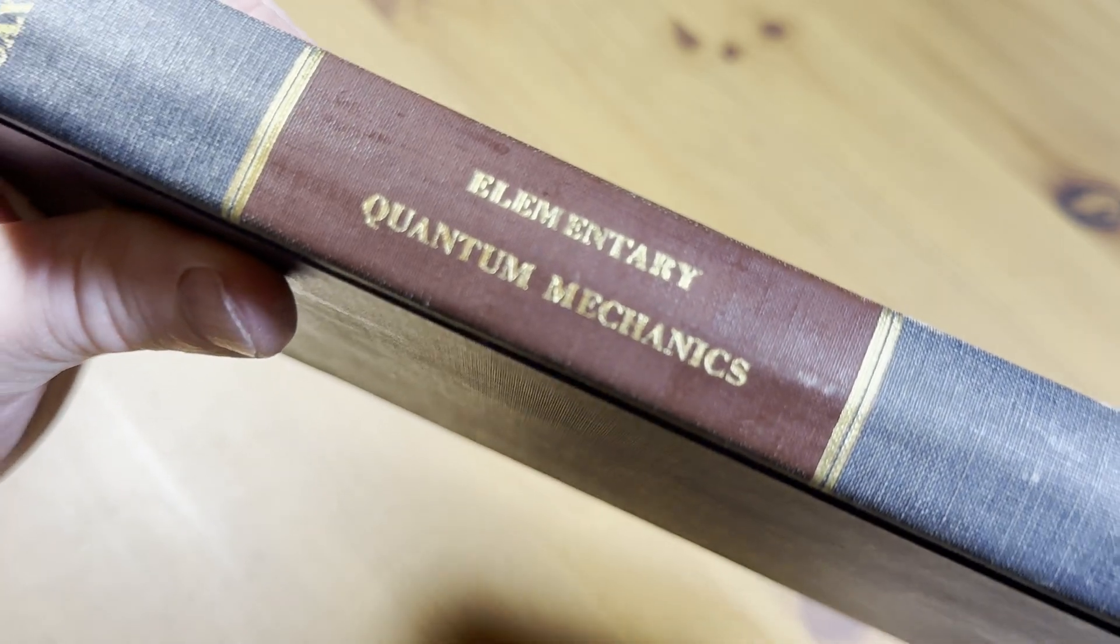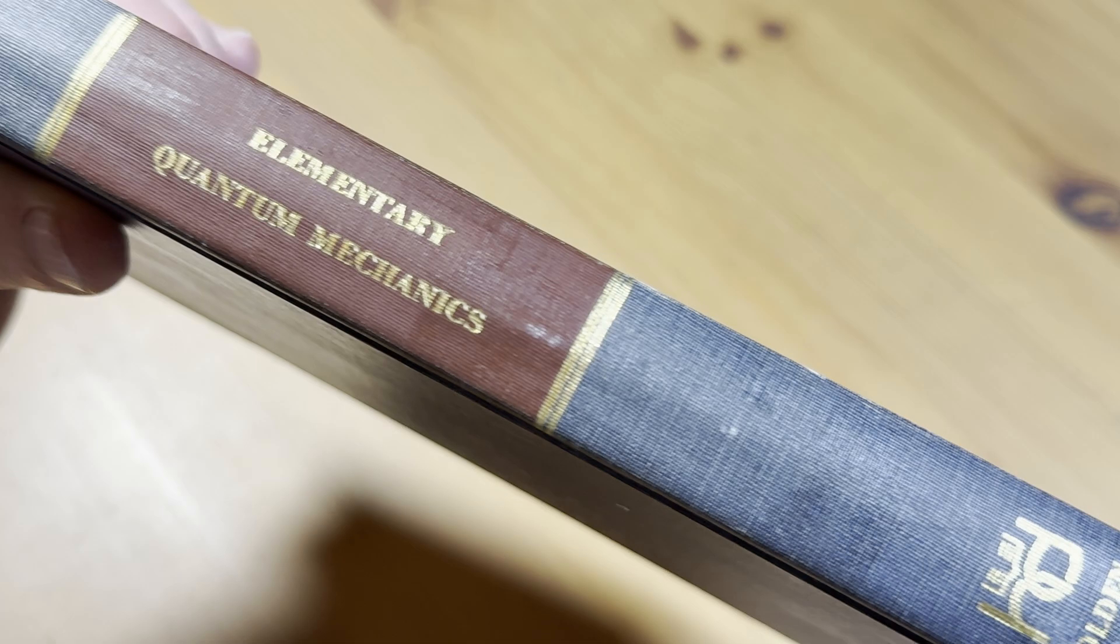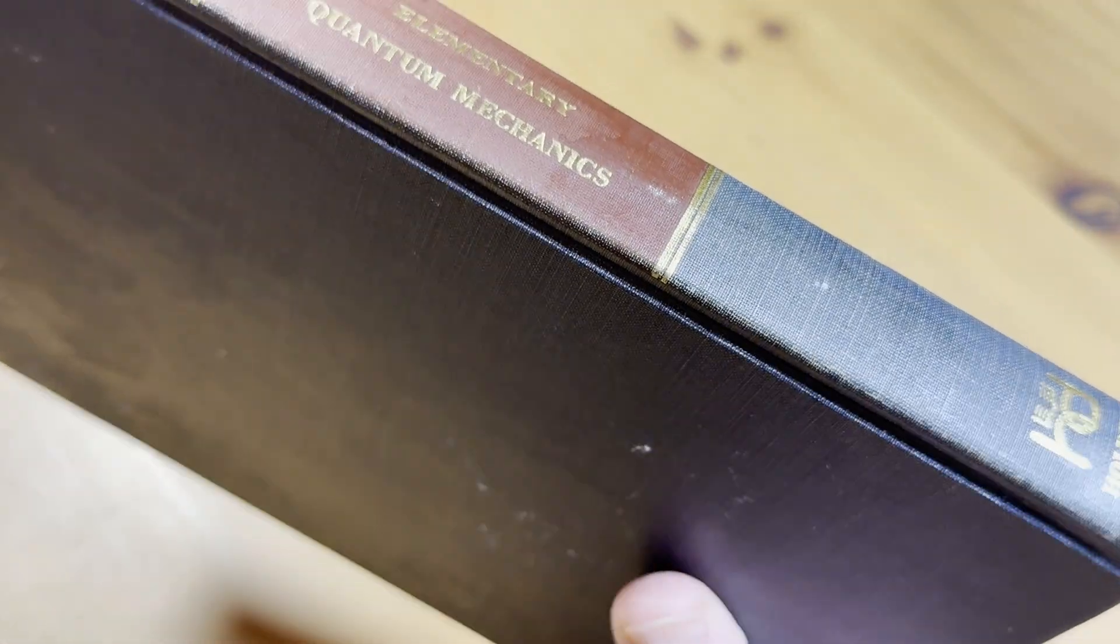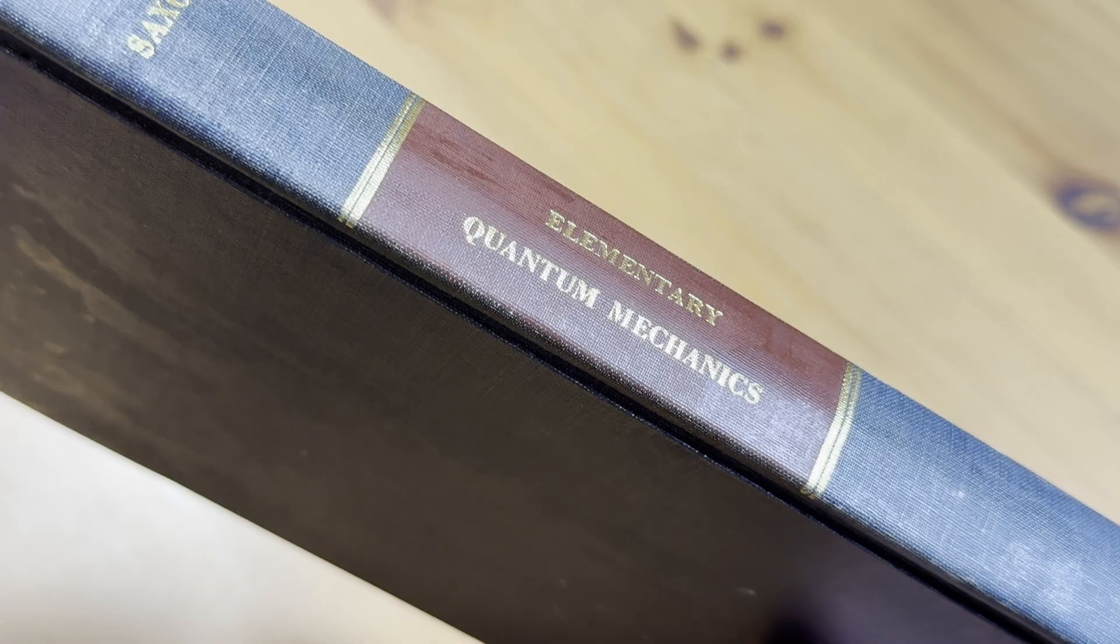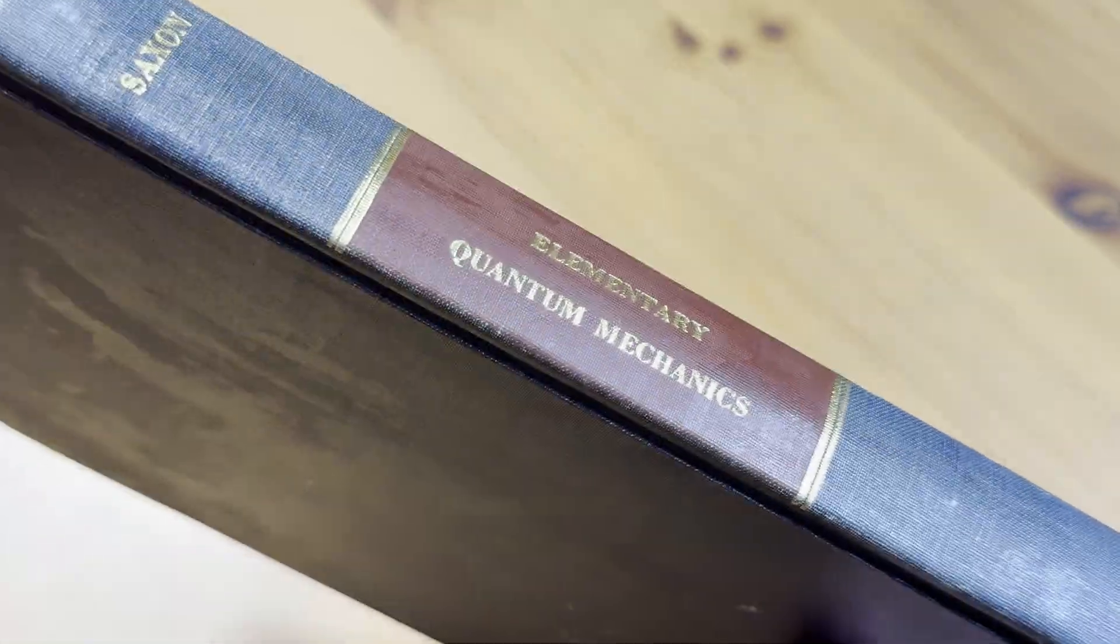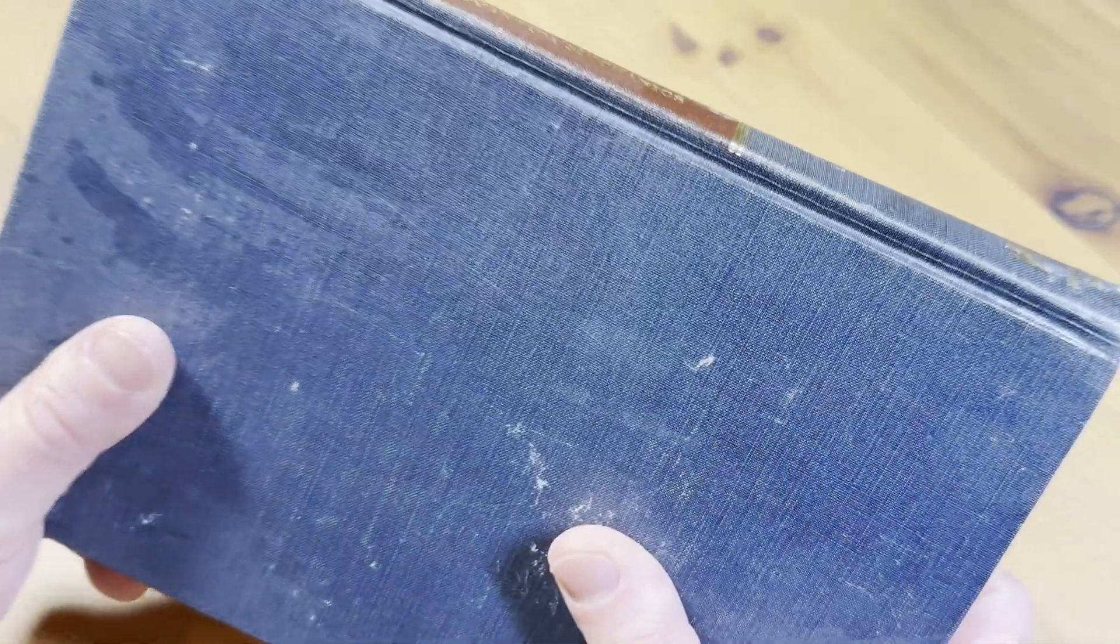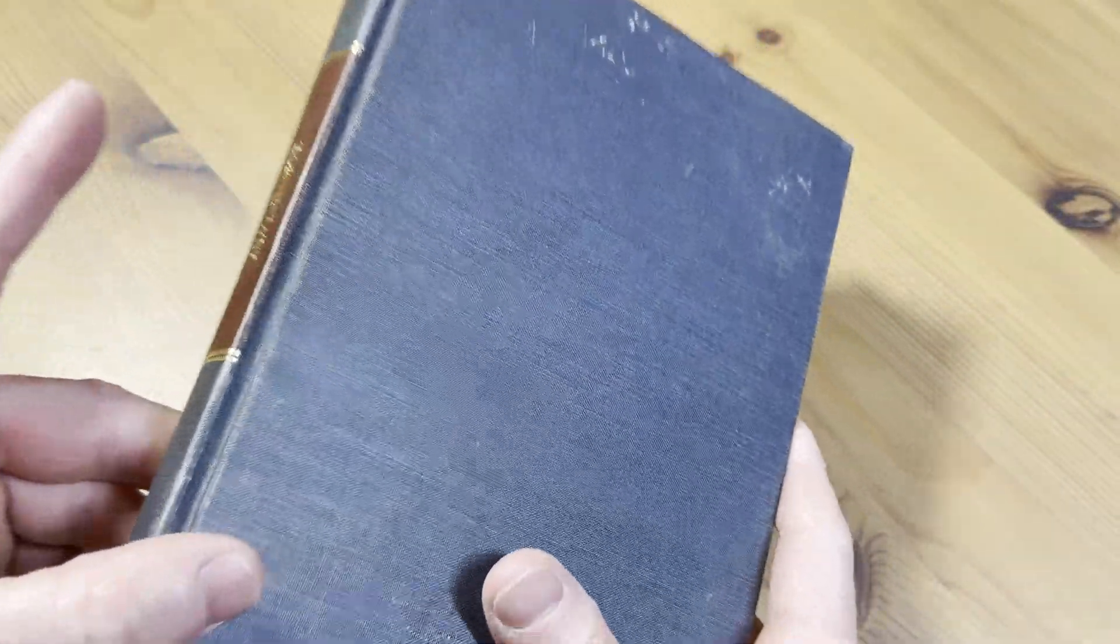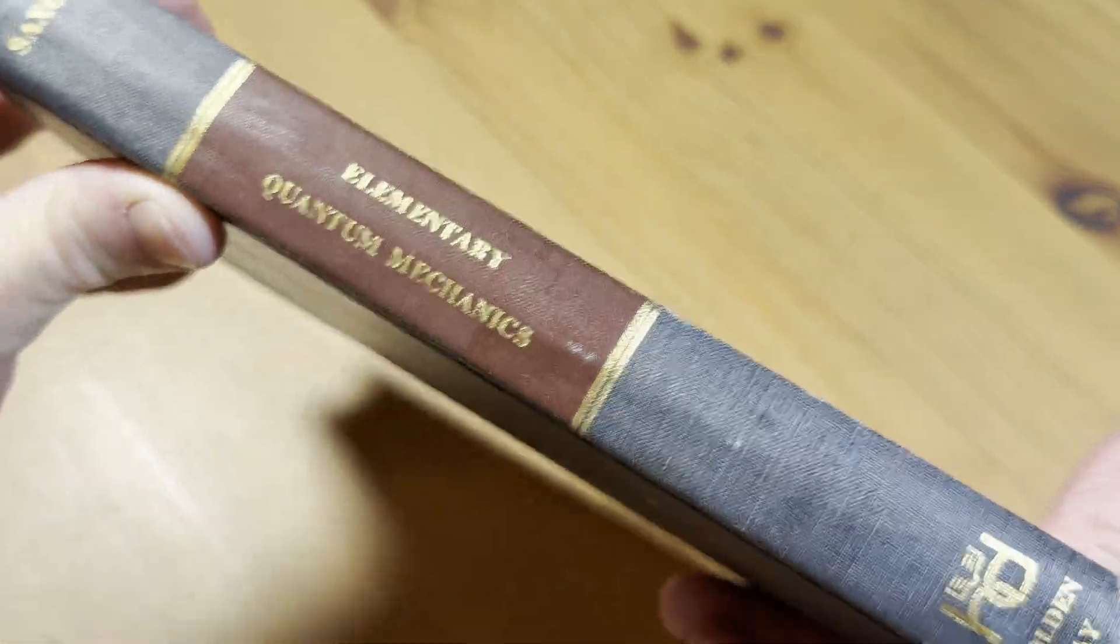Elementary Quantum Mechanics. This one is by Saxon and this is a book that a person could use to learn quantum mechanics on their own. Having said that, this book requires a lot of prerequisite knowledge and we're going to talk about exactly what you need to know in order to jump into quantum mechanics in this video.